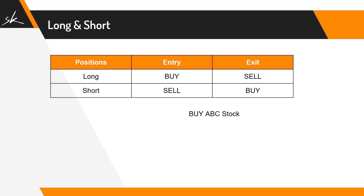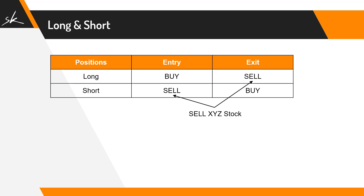Now if I say I want to buy ABC stock, the confusion is: am I talking about the first buy or the second buy? Similarly, if I say I want to sell XYZ stock, am I talking about the first sell or the other sell? To overcome this confusion, certain market terminologies are used. In a long position, the entry is called 'buy' and the exit is called 'sell.' But in a short position, the entry is not just called 'sell' — it is called 'sell short,' and the exit is called 'buy to cover.'